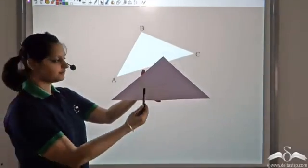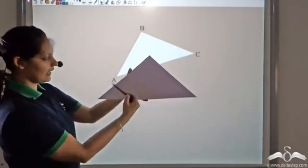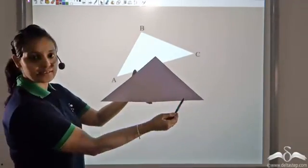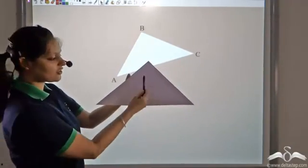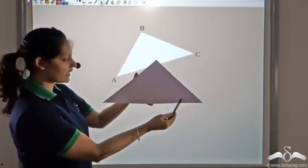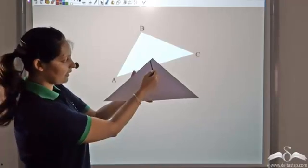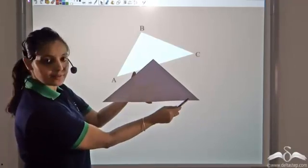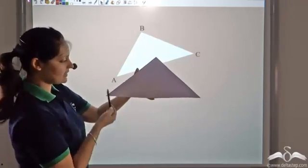So we have this triangle A, B, C. This triangle has three sides AB, BC, and CA.